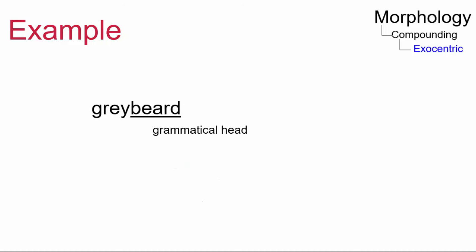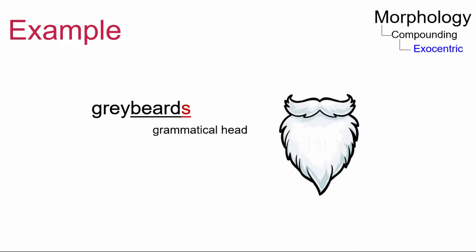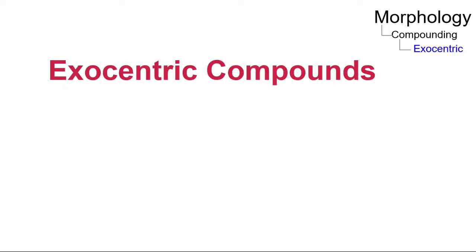In the second example, the grammatical head of the compound is beard, as it takes inflectional markers. However, beard does not define the meaning of the compound. A graybeard is not a type of beard, but rather an old man.